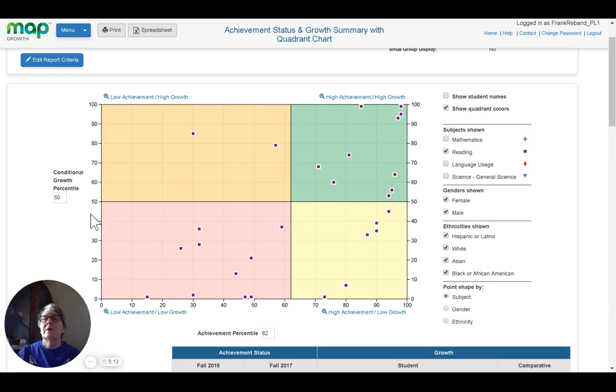I can do the same thing for the growth percentile if I need that. I can also, for either of them, change it using this typing in the number. So I could put in a 65 for this and look at a difference in the way that the growth is. Let's put them both back down to the 50 so we can see about where average is.